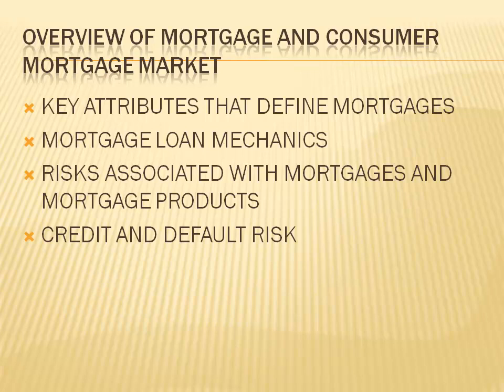Subprime loans have higher rates of delinquency and default compared to prime loans and could be associated with higher loan-to-value ratios of 95% or above, borrowers with lower income levels, and marginal or poor credit history, i.e., a FICO score below 660. High loan-to-value suggests higher risk of default. Upon issuance, subprime loans are carefully scrutinized by the servicer to ensure timely payment. Alt-A loans are between prime and subprime — essentially prime loans, but certain characteristics make them riskier, such as unusually higher loan-to-value, less documentation like income verification or down payment sources.